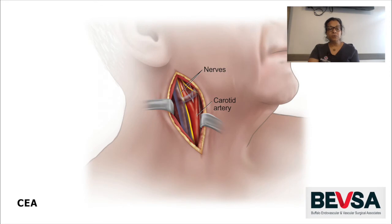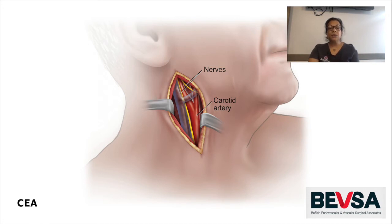Once the artery is exposed, we put retractors in place to further move around the surrounding tissue so we can clearly see the artery. The picture shows the exposed carotid artery with a lot of important nerve fibers that run near the carotid artery. The anatomy is important to understand because the surrounding nerves are sometimes stretched during the procedure and can cause mild temporary neurological deficits like numbness around the incision, numbness around the face, occasionally tingling, and sharp shooting sensation around the incision.